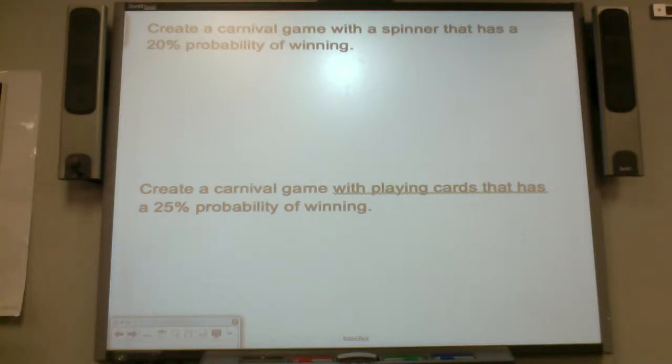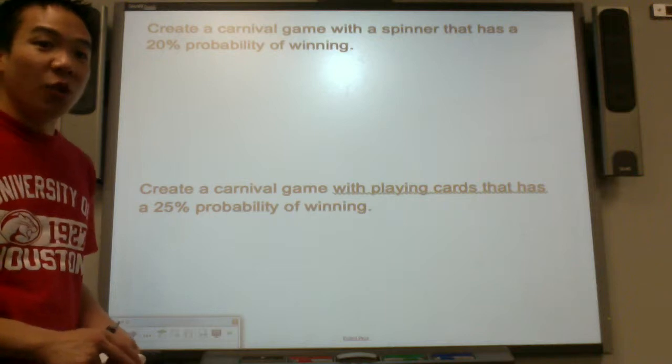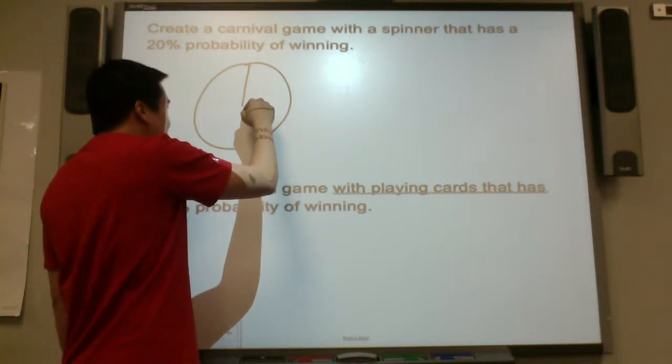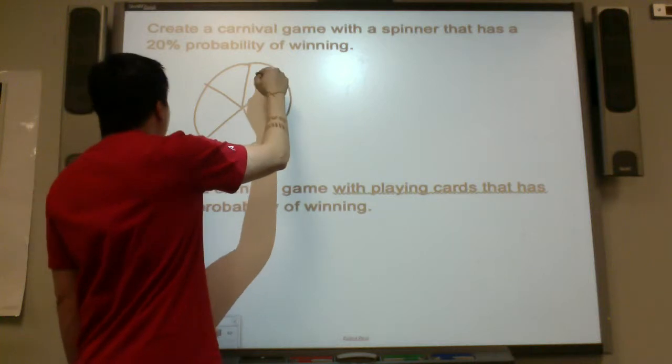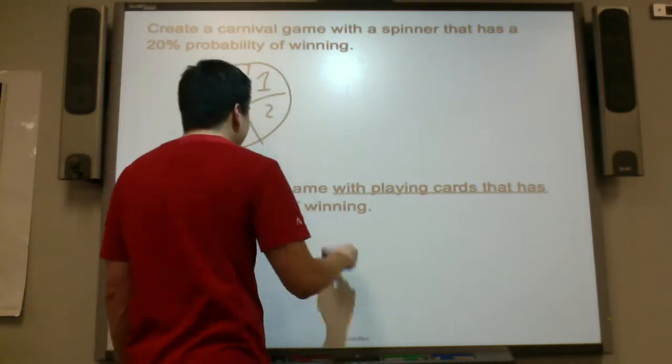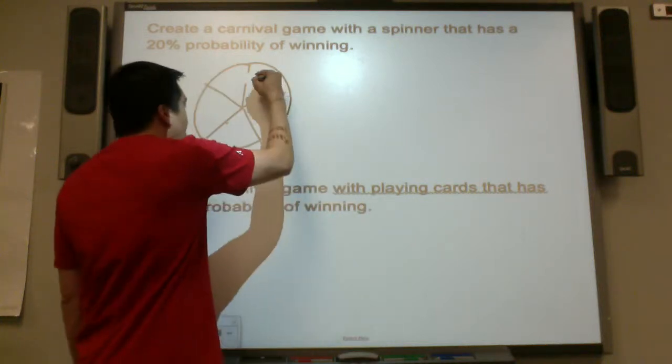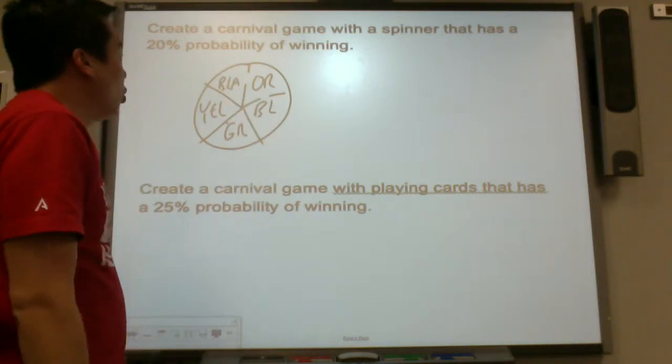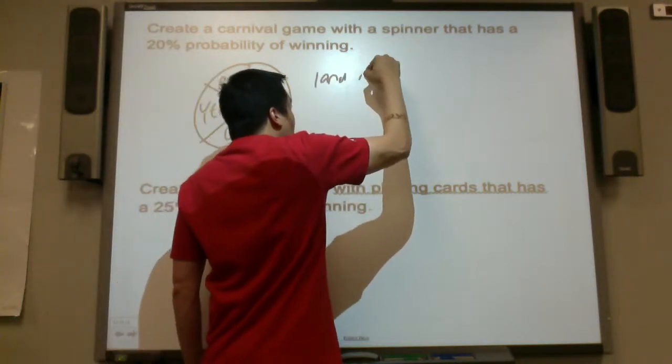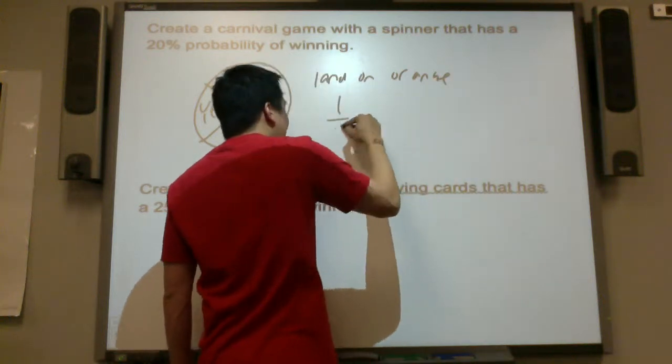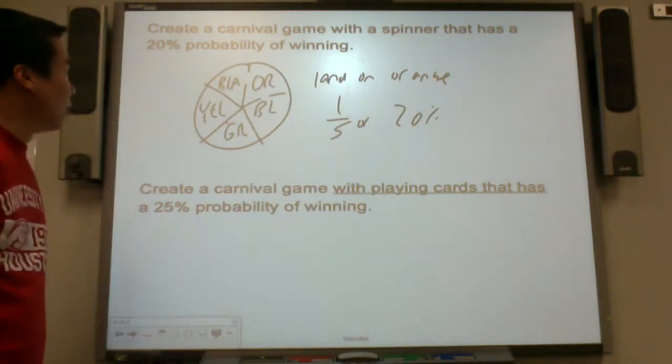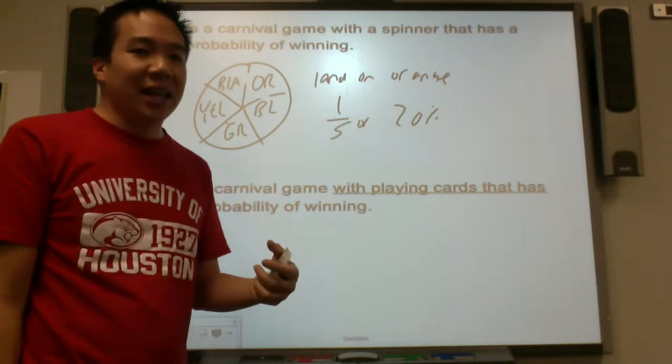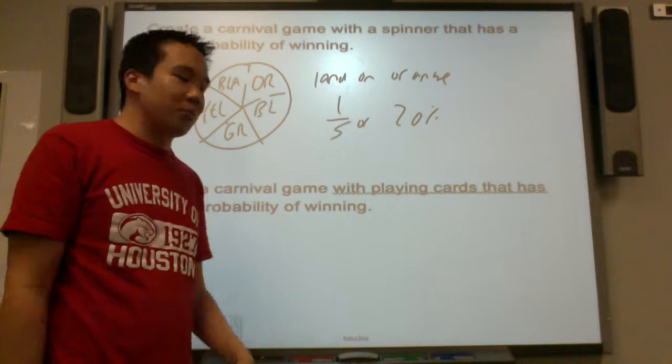Next one. Create a carnival game with a spinner that has a 20% probability of winning. Well, what if we divide this into five parts? Let's use colors. I think colors are easier to use on a spinner. So let's say this is orange, this is blue, this is green, this is yellow, and this is black. If you land on orange, that's a one out of five chance or 20% chance of winning. Or if we had done 10 sections of this spinner, you would have to land on orange twice. Two out of 10, which is 20%.